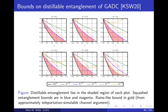There's something called coherent information, which gives a lower bound on how much entanglement you can distill — that's shown in each plot. The upper bounds constructed from squashed entanglement are shown in blue and magenta in each plot. Squashed entanglement is a good bound for low levels of thermal noise, but the range bound ends up doing better as the noise is increased. We call it a range-like bound because we need some tricks to apply the range bound precisely.